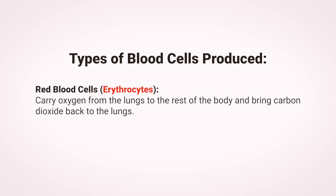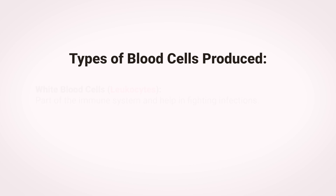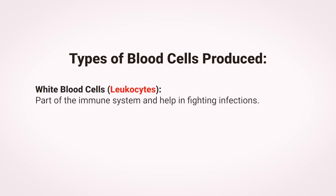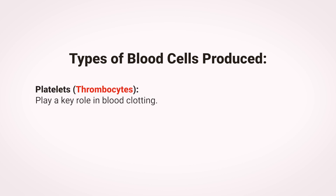Types of Blood Cells Produced: Red Blood Cells, or Erythrocytes, carry oxygen from the lungs to the rest of the body and bring carbon dioxide back to the lungs. White Blood Cells, or Leukocytes, are part of the immune system and help in fighting infections. Platelets, or Thrombocytes, play a key role in blood clotting.